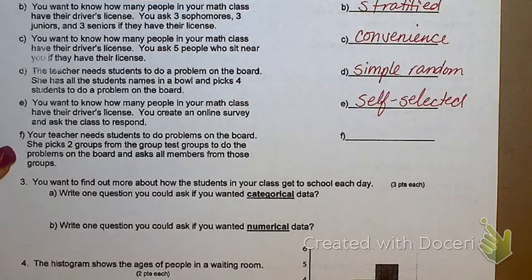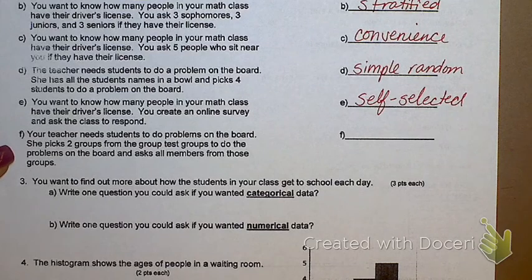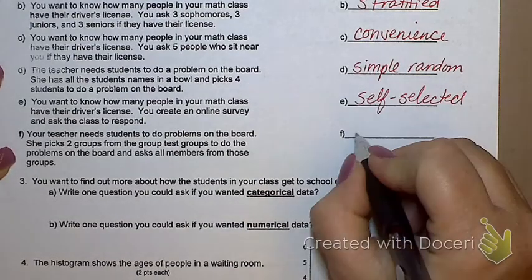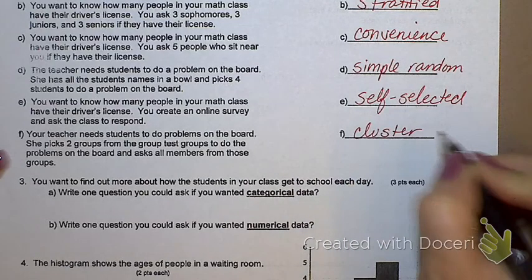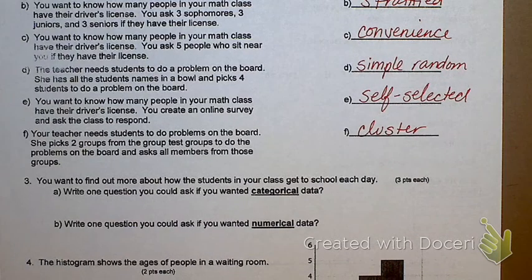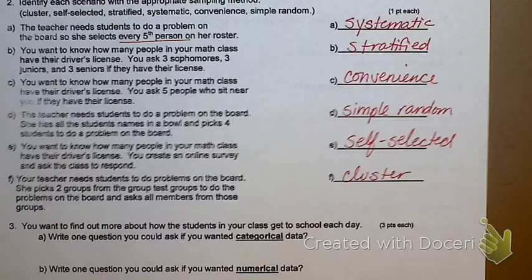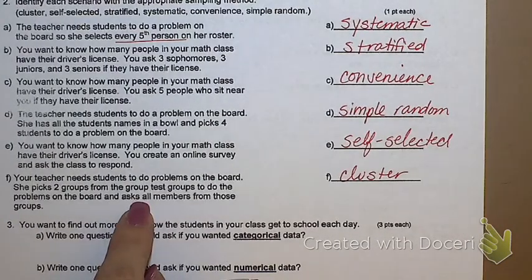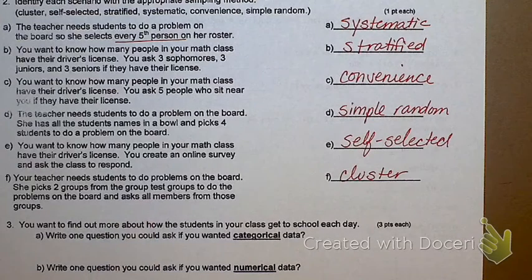Last one. Your teacher needs students to do problems on the board. She picks two groups from the group test groups to do the problems on the board and asks all members from those groups. What's that one? Cluster. Because if I randomly choose group five and group two, I have chosen two entire groups from the groups that were created. That makes it cluster. Now again, tomorrow you're not going to be able to use process of elimination on that last one. You could have on this one, but tomorrow you won't necessarily be able to do that.